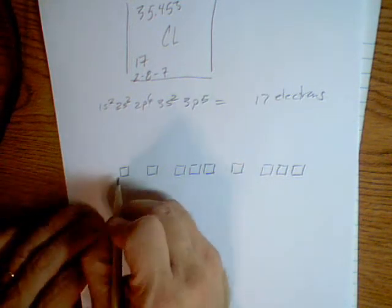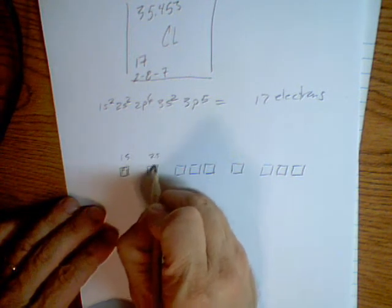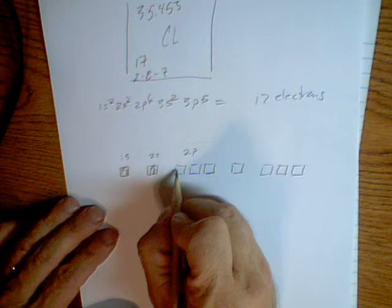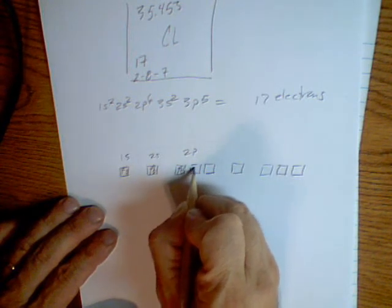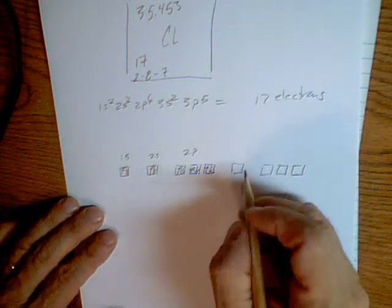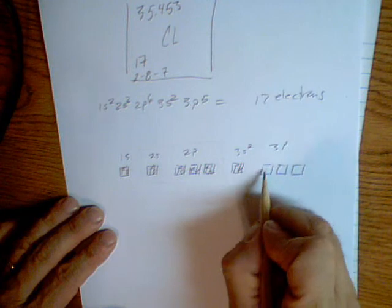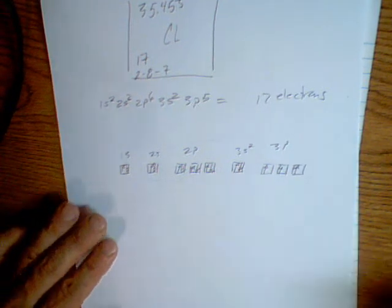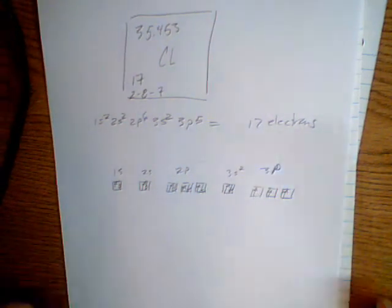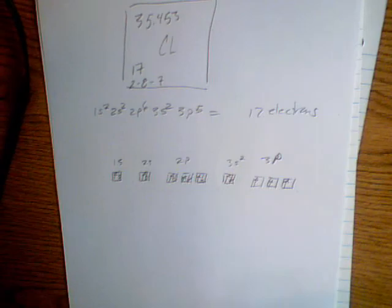And then, if we wanted to do our orbital diagram, we have, for 1s, we have one in each direction. 2s, we have one in each direction. 2p holds up to 2, 4, 6, 8. So, this is all one here. These are full, of course. These are just in opposite spins, because the electrons want to be paired up. And then, this is the 3s, in the opposite direction. And then, 3p, because of the rule, you fill one individually. So, that's the 3p.